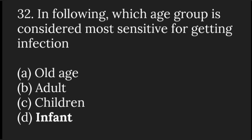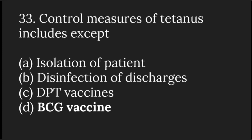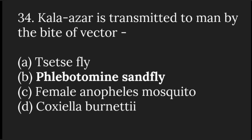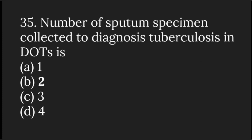Among age groups, infants are considered most sensitive to getting infection. Control measures of tetanus include — except BCG vaccine, as BCG is for tuberculosis. The number of sputum specimens collected to diagnose tuberculosis in DOTS is 2.